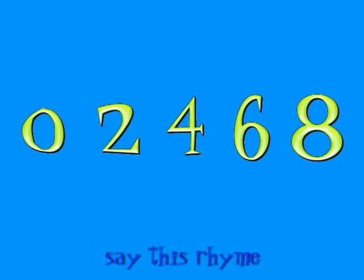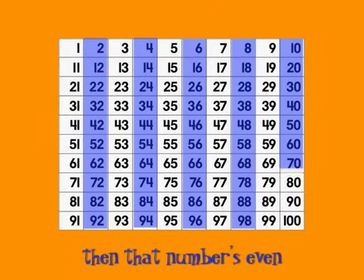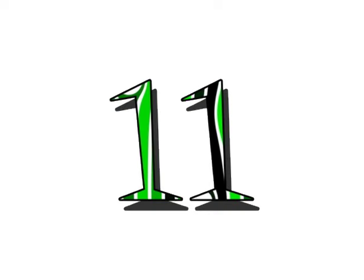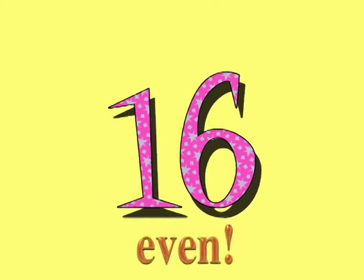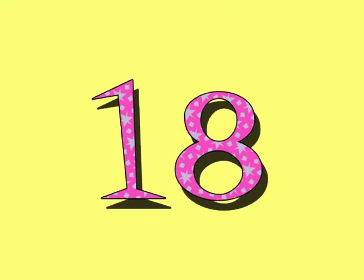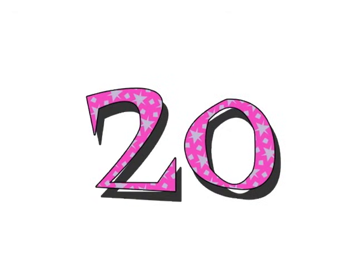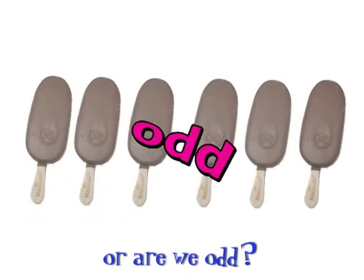Even numbers split right down the middle. Doubles make the even numbers every time. 0, 2, 4, 6, 8. Say this rhyme: if any number ends with one of those digits, then that number's even every time. 11 — Ah. 14 — Even. 16 — Even. 13 — Ah. 15 — Ah. 18 — Even. 20 — Even. 21 — Ah.